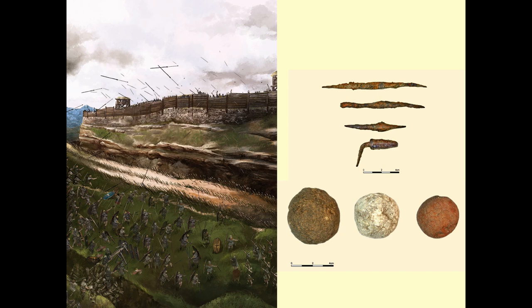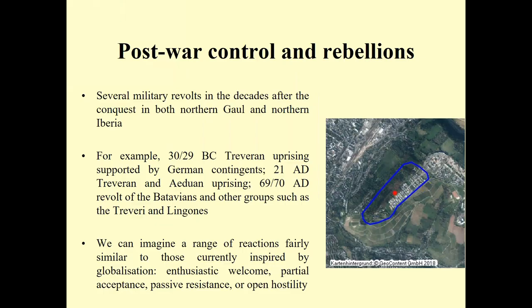A dramatic reconstruction from a Spanish magazine published earlier this year illustrates that this was a major military event. After the war, we see several episodes of rebellion both in Northern Gaul and Northern Iberia — in Gaul starting in the decades after Caesar's conquest and going up to the late first century AD, but always short-term episodes of rebellion followed by larger periods of peace. Generally speaking, one can imagine a range of reactions by different indigenous communities, individuals, or families — from enthusiastic welcome to partial acceptance, passive resistance, or open hostility — and we see the fluidity of alliances and how they change over time.